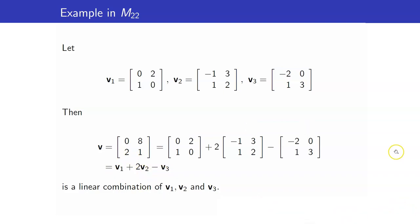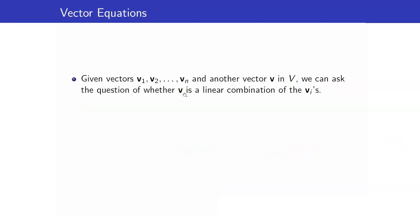We will always be using this term, linear combination, so it's very important that you really understand the meaning of that. If we are given vectors V1, V2, up to Vn, and another vector V, we can ask the question of whether this V here can be written as a linear combination of these Vs over here. This is the same as asking whether the vector equation has a solution. We are solving if we can find scalars that we can multiply to V1, V2, up to Vn.